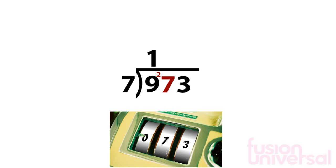7 goes into 27 3 times, with a remainder of 6, which goes in front of the 3 to make 63.